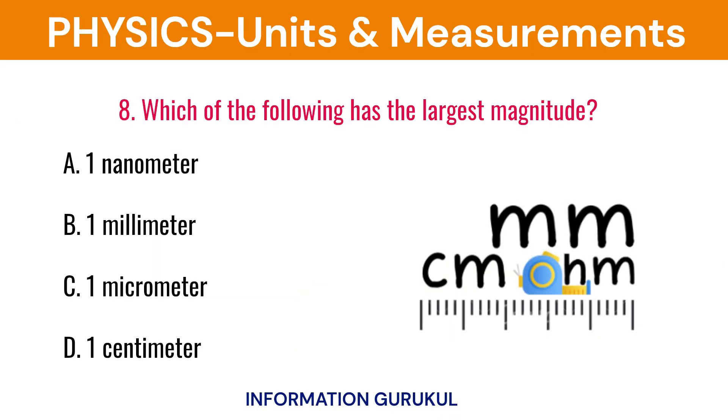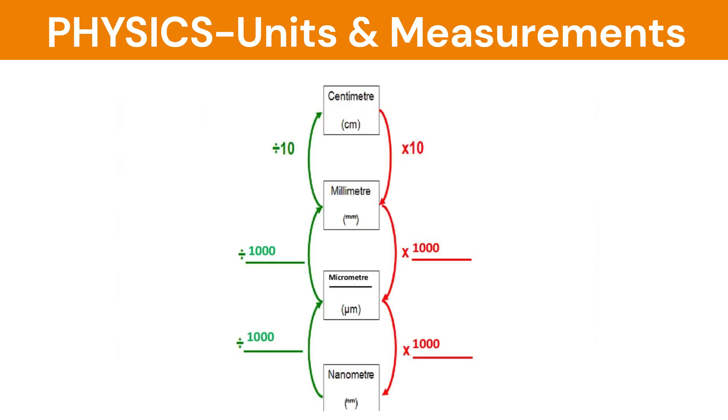Which of the following has the largest magnitude? One centimeter. One centimeter equals 10 millimeters, equals 10,000 micrometers, equals 10 million nanometers.